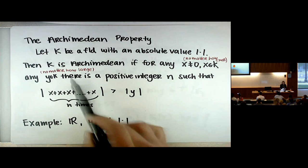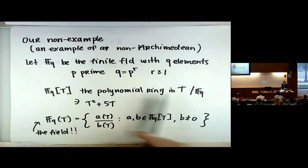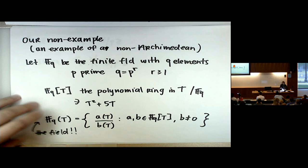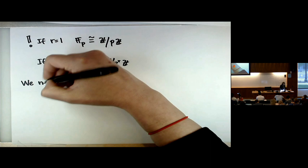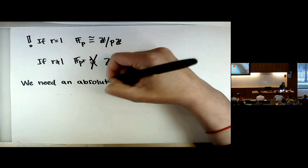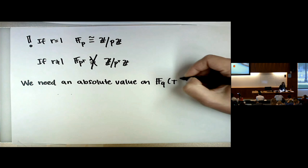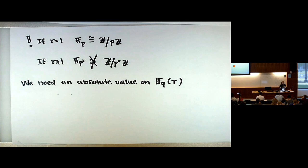I have a field, so I need an absolute value on F_Q(T). One idea might be to use the degree of a polynomial as a size — like T³ should be bigger than T and have size 3. But I need to tell you what an absolute value is before I can say that doesn't work.